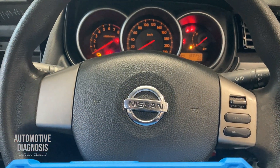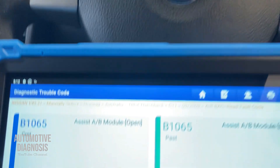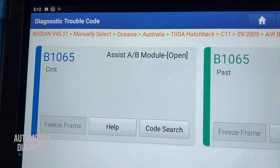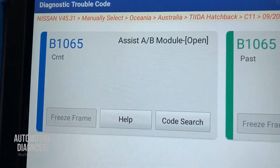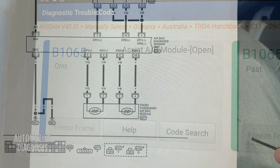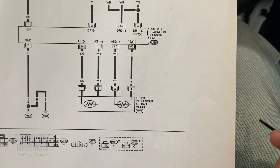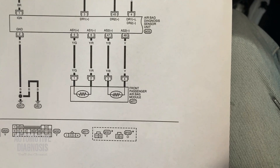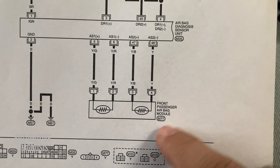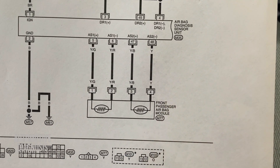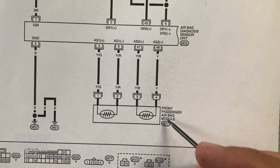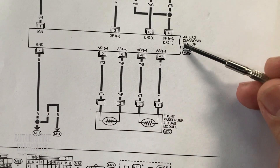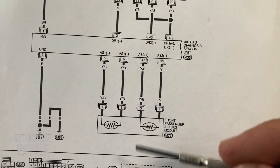Hey everyone, welcome back. In this video I'm going to show you how to diagnose fault code B1065 on this Nissan. As you can see from the fault code description, this code is for the passenger airbag. Here you can see the wiring diagram for the front passenger airbag — the airbag is right here, and this is the airbag control module.